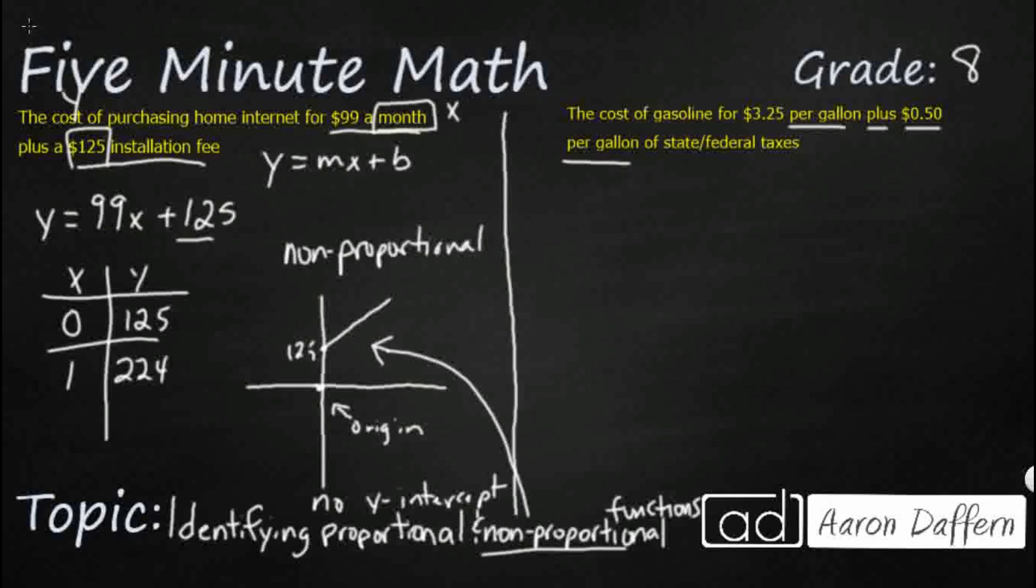And so this is going to look kind of like the cost. So we're going to say y, and our gallon is going to be our independent variable. And you've got two of them right there.